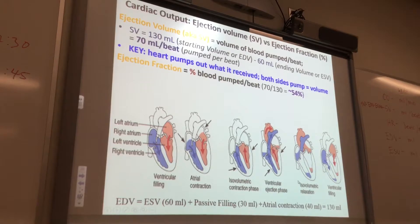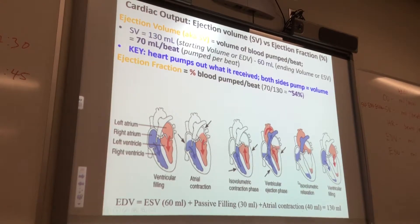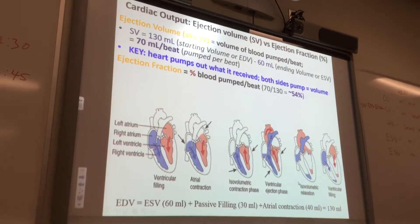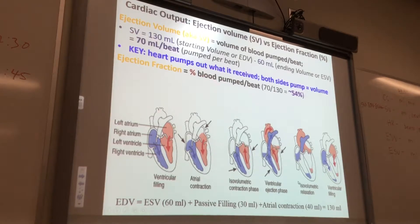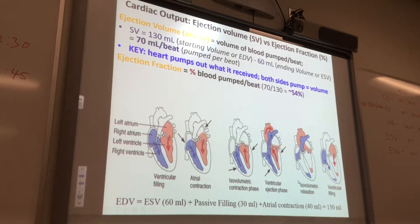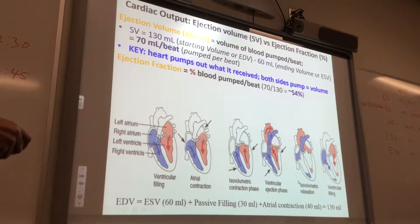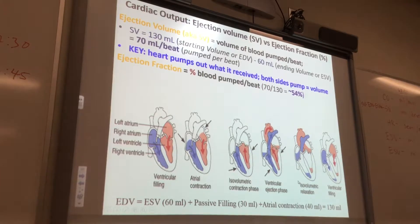This concept is called an ejection fraction — this is to see if you have a healthy heart. It's the percent of blood pumped per beat. In our resting 70-kilogram, 21-year-old male, he started with 130 mils, his stroke volume was 70 mils, so his ejection fraction is 54%.